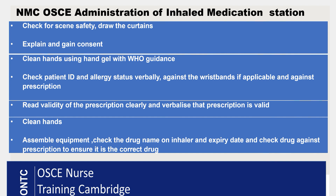Next, check the validity of the prescription — that's really important because we're giving a drug and need to apply all six rights. Read your prescription clearly and verbalize that this is a valid prescription. Then clean your hands and start assembling your equipment: you just need an inhaler and a spacer. Before putting it together, always check that this is the same drug as on your prescription — check the drug name and expiry date loudly so your examiner can hear, then confirm against your prescription chart.